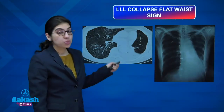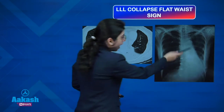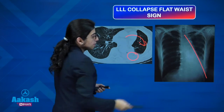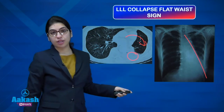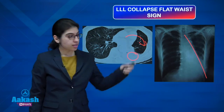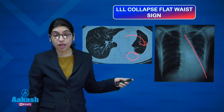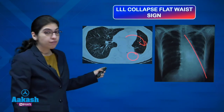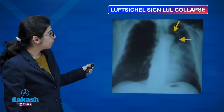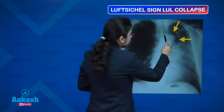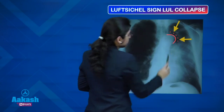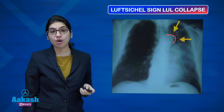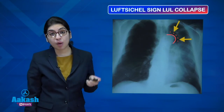Left lower lobe collapse also produces the flat waist sign — because of the collapse, the heart shifts left and all the moguls of the left heart border are lost, making it appear straight. Signs of left lower lobe collapse: flat waist sign, retrocardiac sail sign, and wheel sign. A sickle-shaped air lucency around the arch of aorta — the Luftsichel sign — indicates left upper lobe collapse.